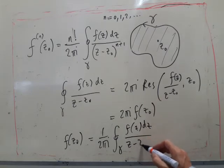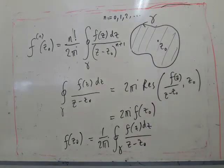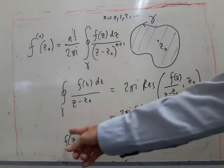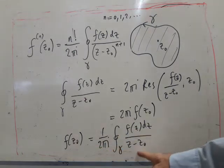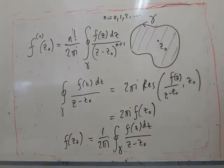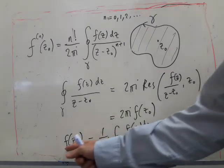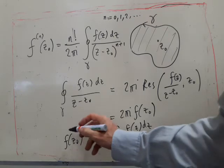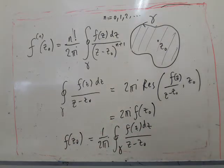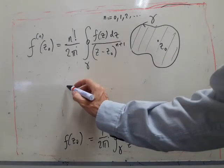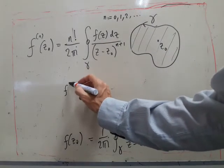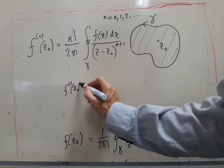Now, this is the n equals zero result. To get the n equals one result, all we do is differentiate both sides with respect to z naught. So if we differentiate this with respect to z naught, then differentiating this with respect to z naught we'll get f dashed or f one at z naught.